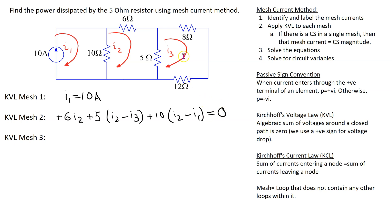Let's repeat the process for mesh 3. Here let's start at the 5 ohm resistor. There are two mesh currents flowing through this resistor.